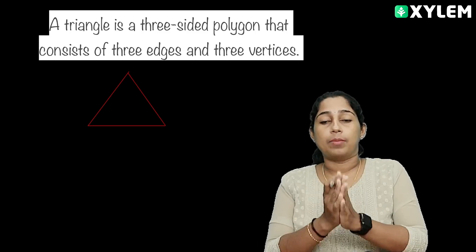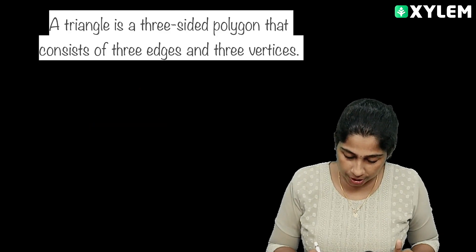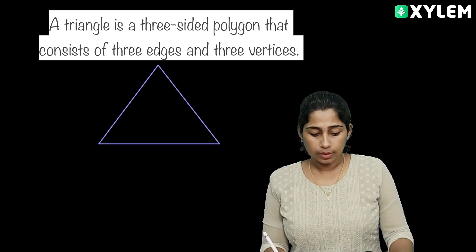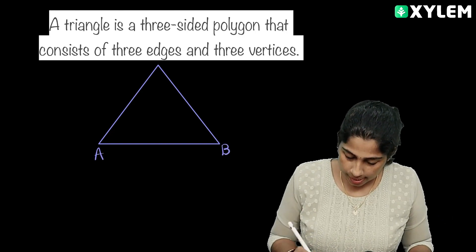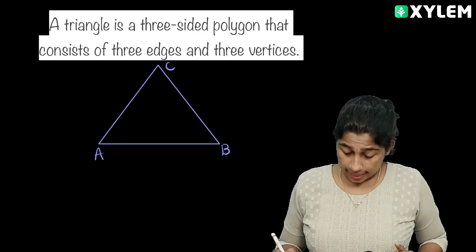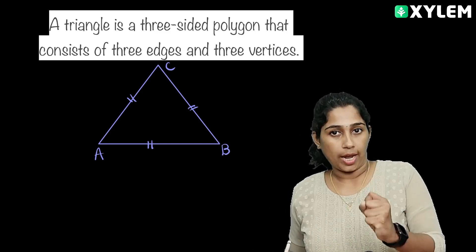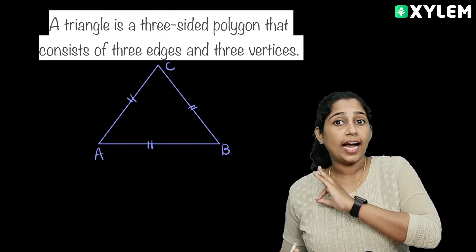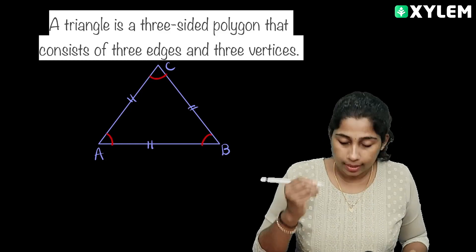What kind of triangle is this? Now look at this triangle — A, B, C. A triangle has three vertices, three edges: AB, BC, and AC. It also has three angles: Angle A, Angle B, and Angle C.